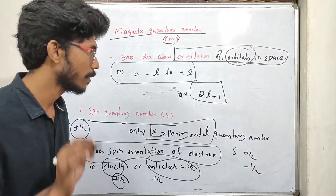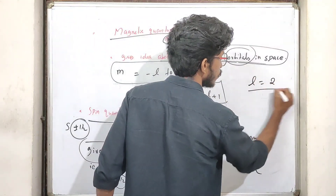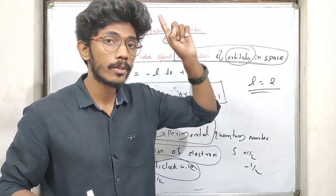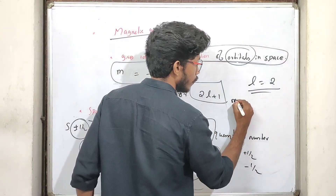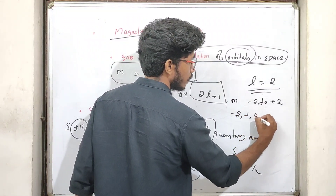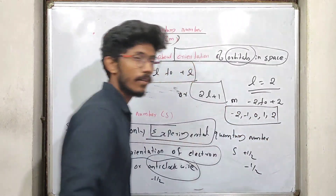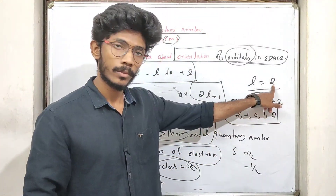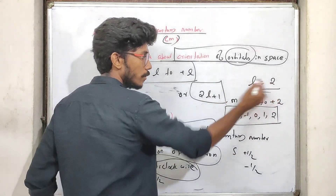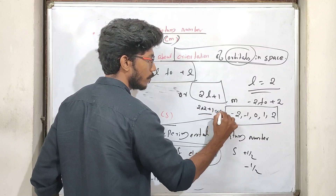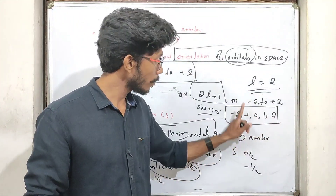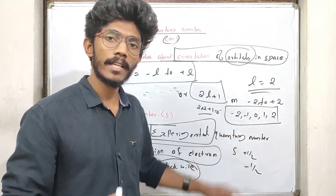M exists with 2L plus 1 values. Suppose L is 2, then M gets values from minus 2 to plus 2 — that is, minus 2, minus 1, 0, 1, and 2. So when L equals 2, M equals minus 2, minus 1, 0, 1, or 2. These values are possible.